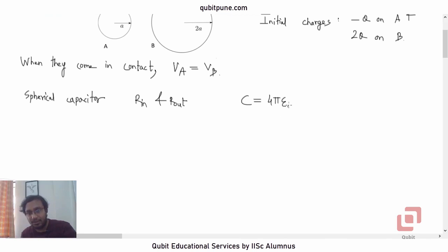What is the capacitance C? 4π ε₀ Rin × Rout / (Rout - Rin). You can derive this formula. This is the formula for spherical capacitor.